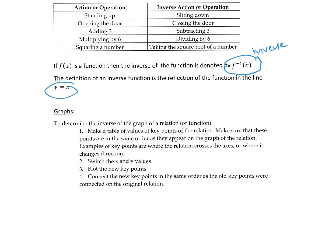We can express functions in a couple of different ways: graphs, ordered pairs, and equations — those are the three main ways we represent functions. If we want to find the inverse of a graph, we are going to take some key points on that graph, switch the x and the y, plot the new points, and then connect them in the same order as the old points.